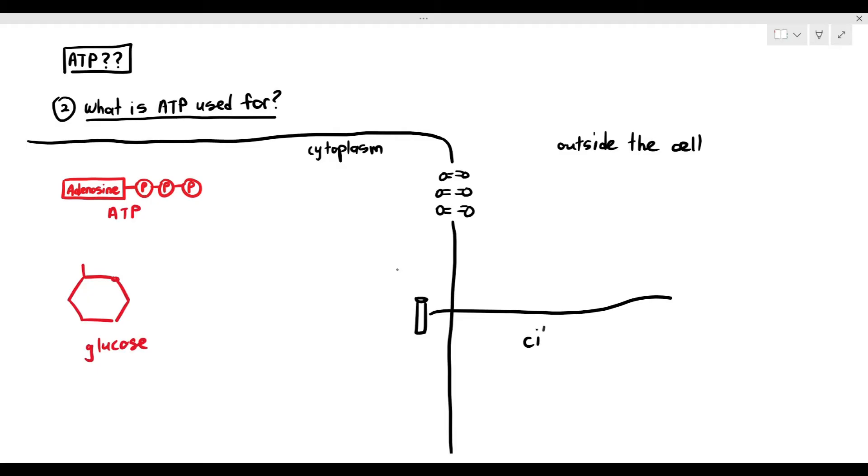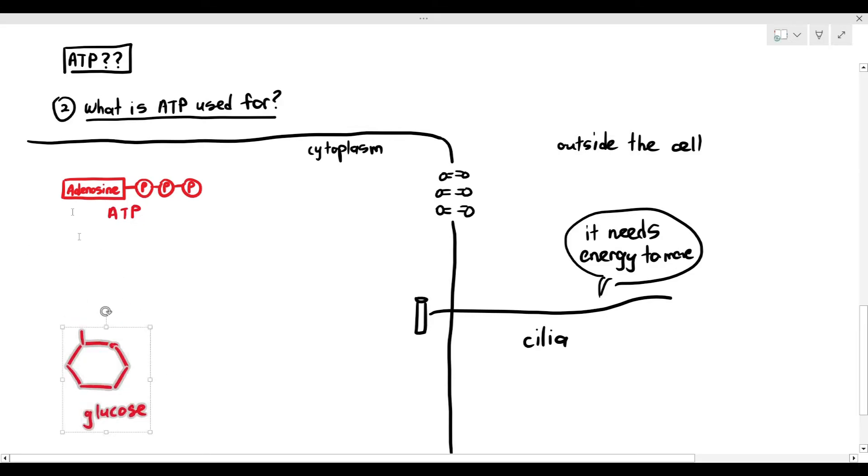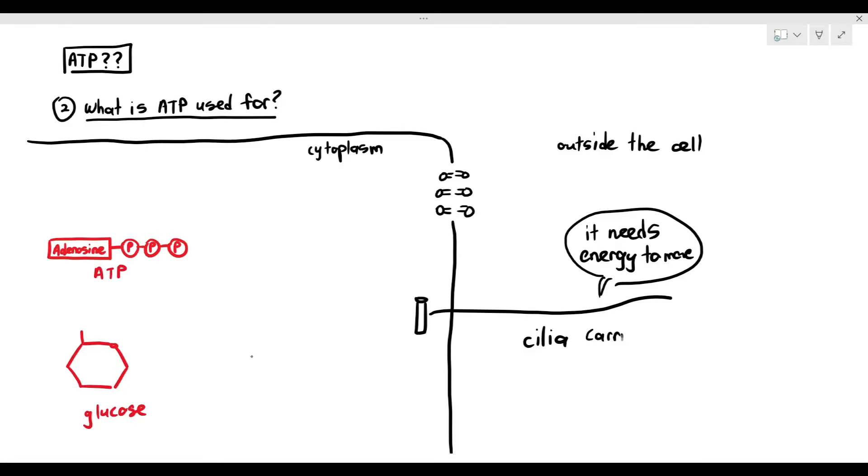And for example, over here, I'm drawing out a cilium. Cilium is the singular form for cilia. The cilia are important because what they do, especially in your airway, they are supposed to move the mucus upwards to prevent the accumulation of mucus. The point of the matter is, cilia need to move, and they need energy to move.